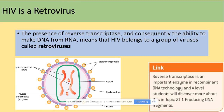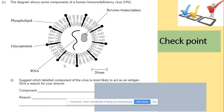HIV is a retrovirus. We call it a retrovirus because it has reverse transcriptase. Reverse transcriptase is an enzyme that can make DNA from RNA. The virus has RNA, but thanks to reverse transcriptase it can make DNA from that RNA inside the host cell. This is why we call them retroviruses.